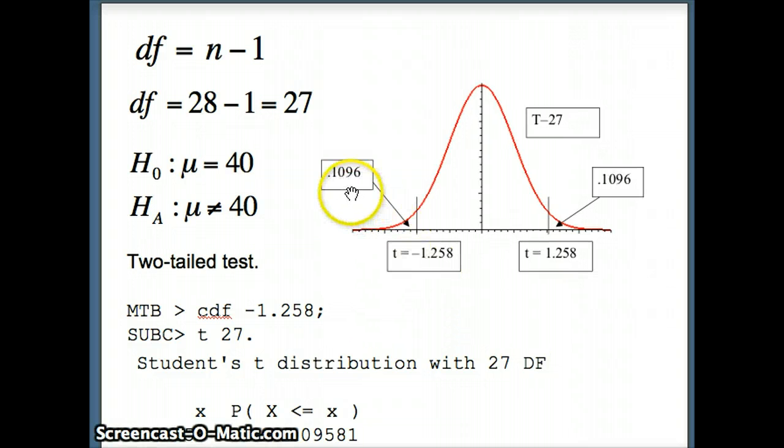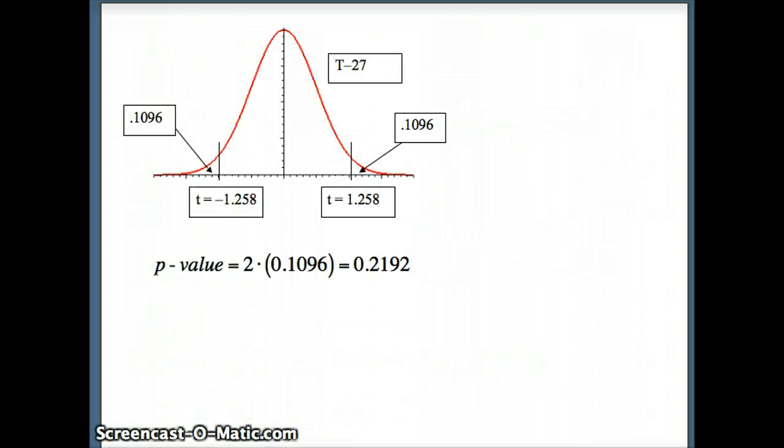If there's 0.1096 in the left tail, there is also 0.1096 in the right tail. Our p-value is the total area that the arrows are pointing to. So 2 times 0.1096 or 0.2192. And that is a large p-value.